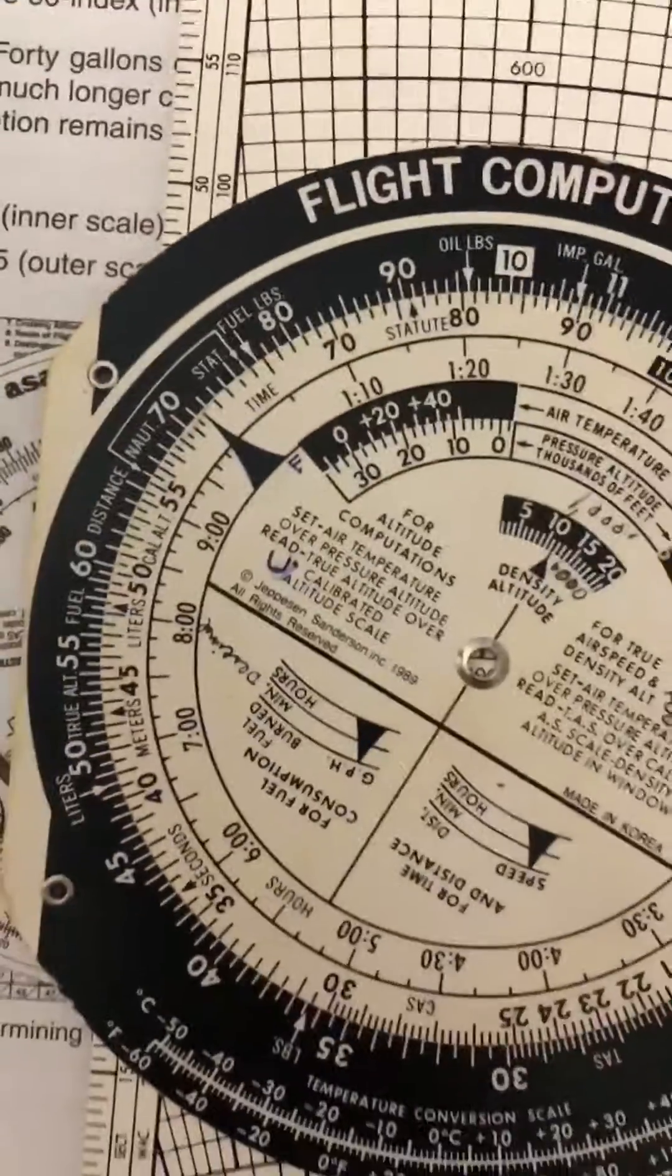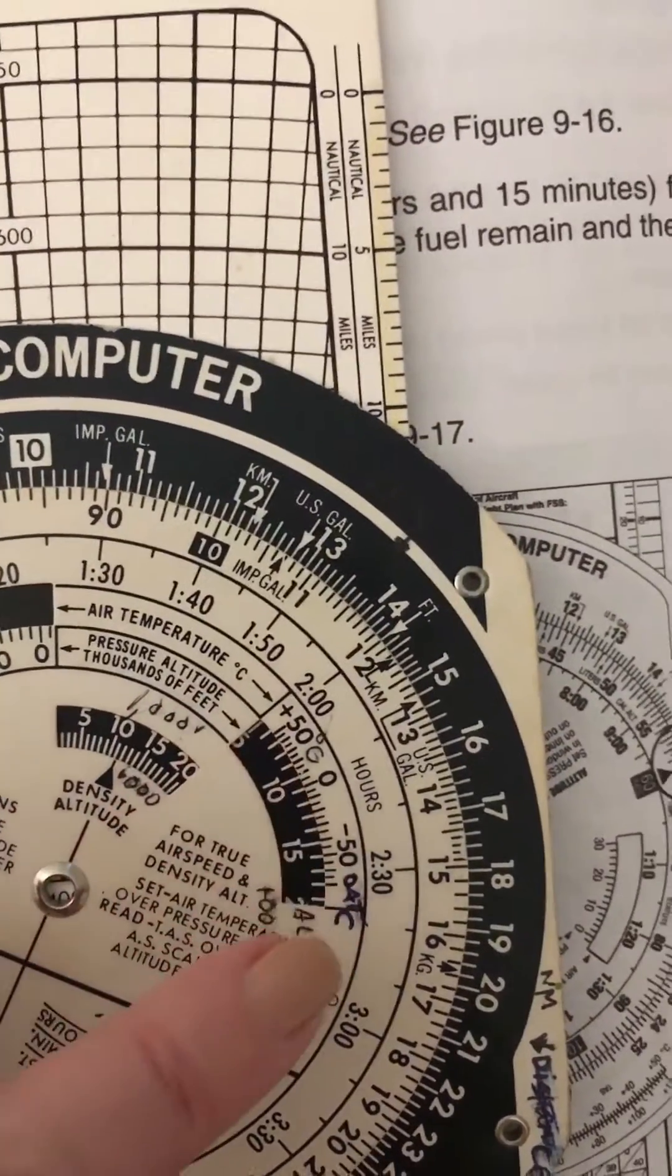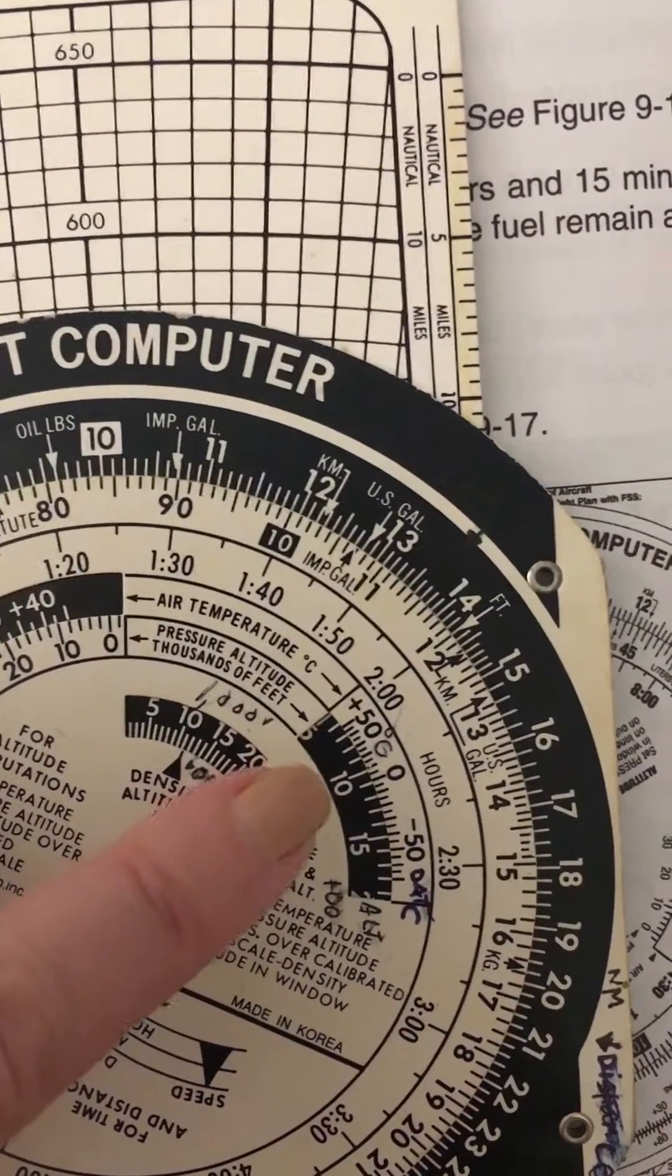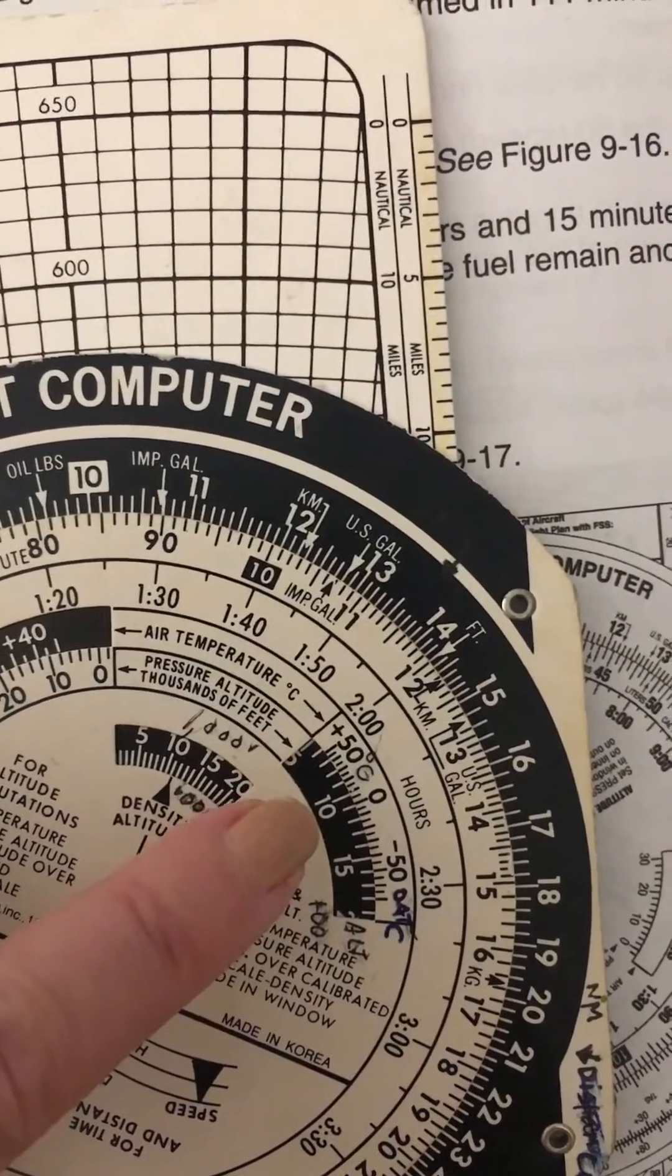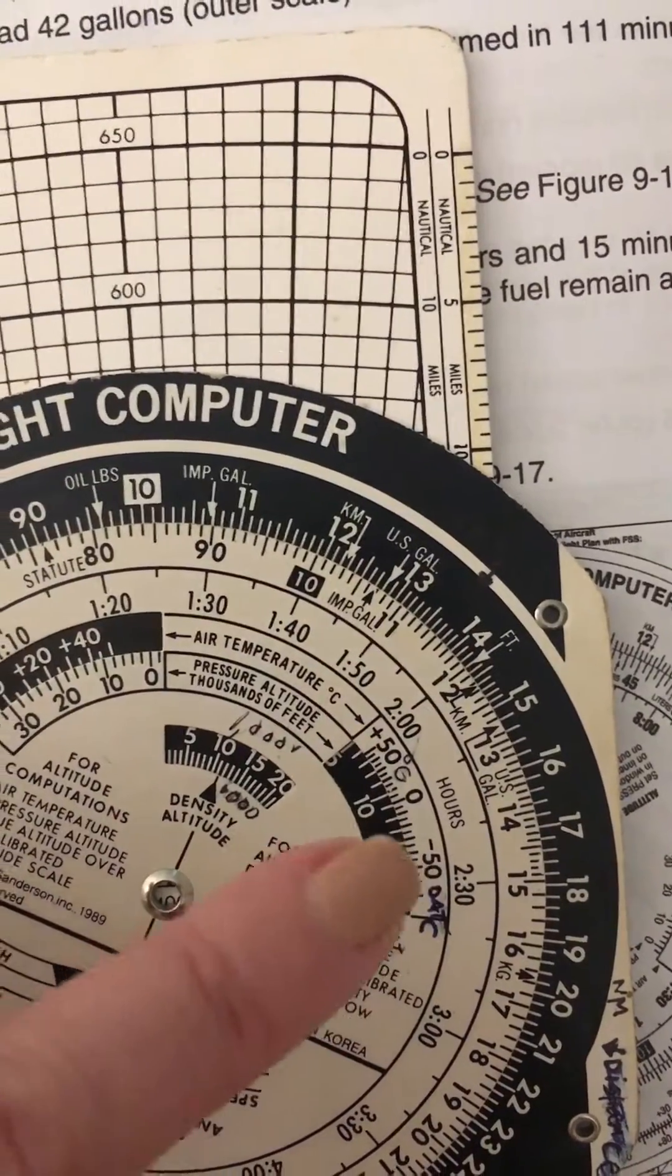We go to this window right here. This is the temperature on top, this is the pressure altitude. We've already lined them up, so that is 10,000 feet right there with 10 degrees Celsius. This is the plus side, this is the minus side.